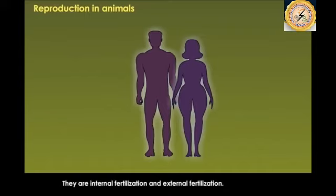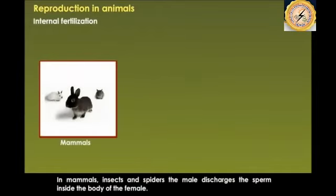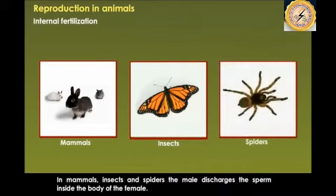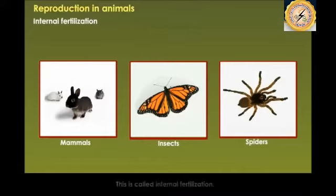Let us focus on internal fertilization. In the case of mammals, insects, and spiders, the male discharges the sperm inside the body of the female, so the fertilization of the ovum also occurs inside the body of the female. This is known as internal fertilization.